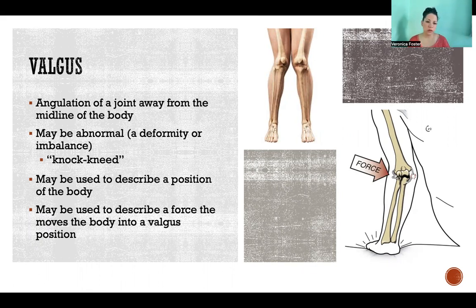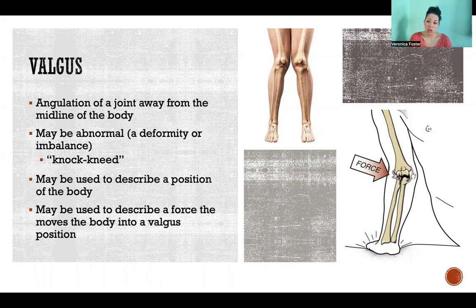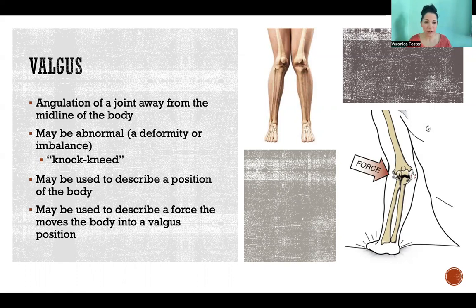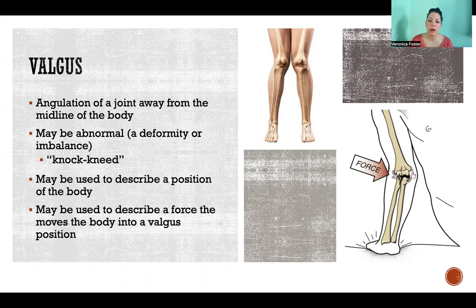We use this term to describe abnormalities or deformities, postural imbalances. It could also be used to just describe the position of the body, even if it has nothing to do with an imbalance or anything unhealthy. For example, I can just put my elbows in a valgus position. So valgus doesn't always mean that something's wrong — it's just referring to that angulation away from the midline of the body.